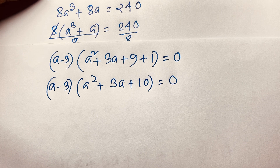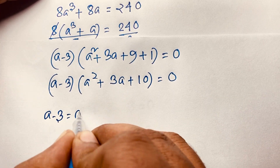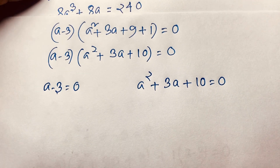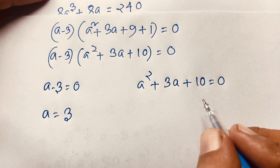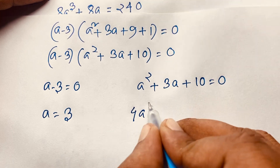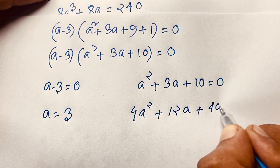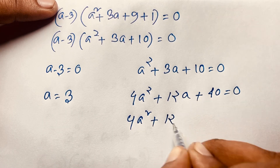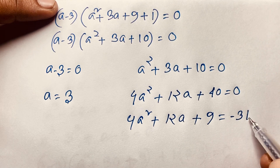This gives two cases: a - 3 = 0, so a = 3; or a^2 + 3a + 10 = 0. For the quadratic, I multiply both sides by 4: 4a^2 + 12a + 40 = 0.